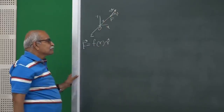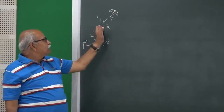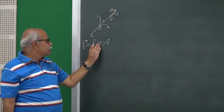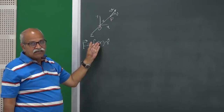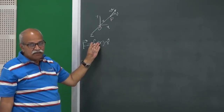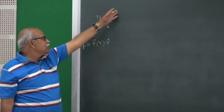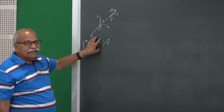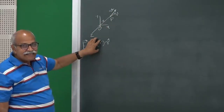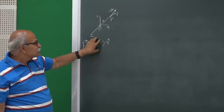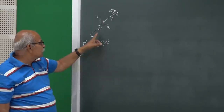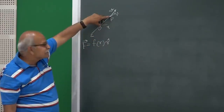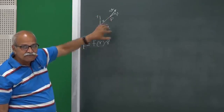The force on the particle is F = f(r) r̂, where r is the distance and r̂ is the unit vector in the radial direction. The force can be away from O or towards O depending on whether f(r) is positive or negative. The direction is along OP and the magnitude depends only on r — that is what makes it a central force.